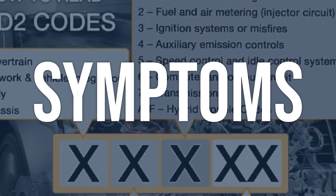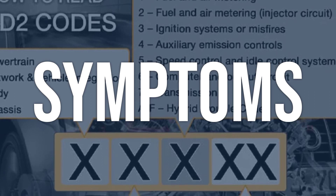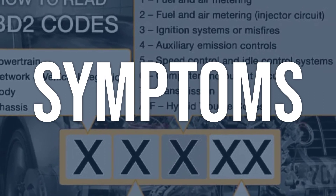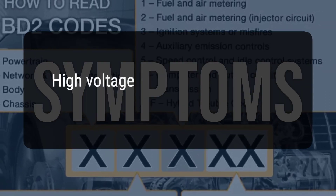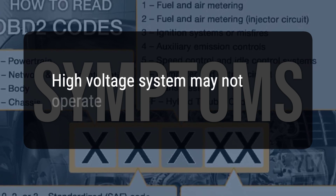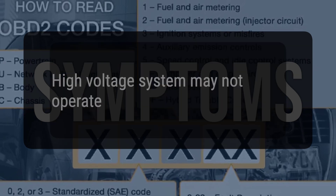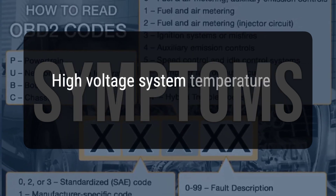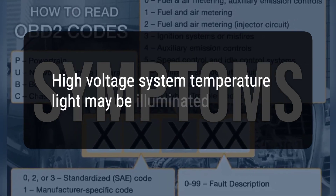When you encounter this OBD error, the vehicle typically exhibits the following symptoms: 1. The high voltage system may not operate. 2. The high voltage system temperature light may be illuminated.